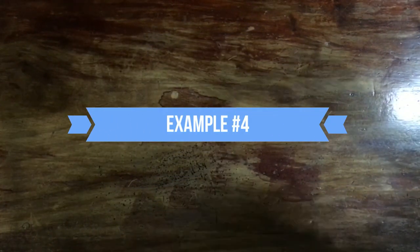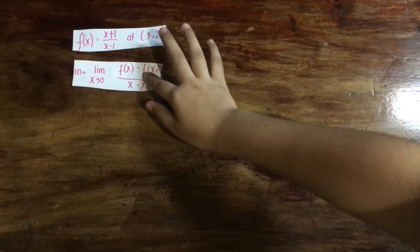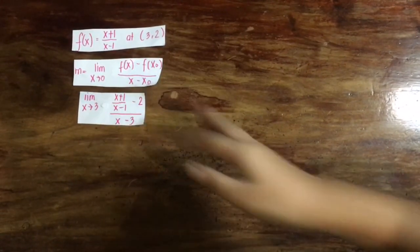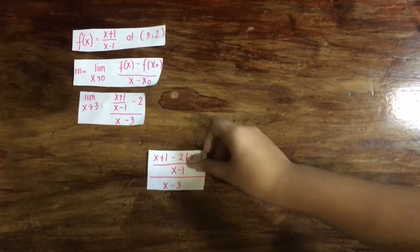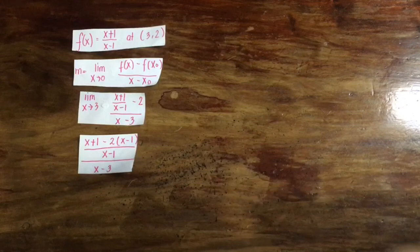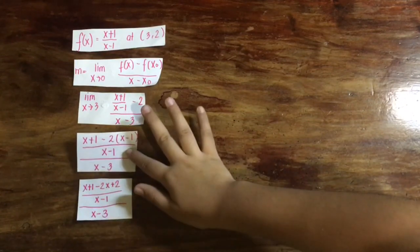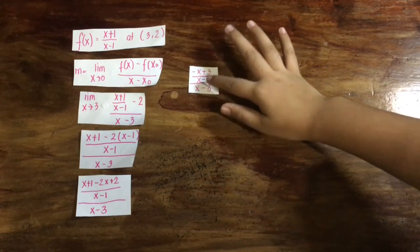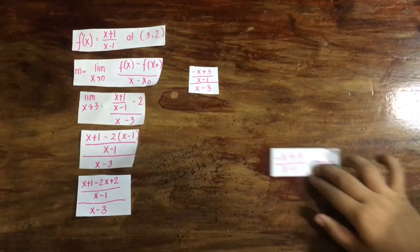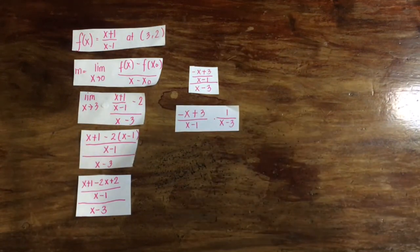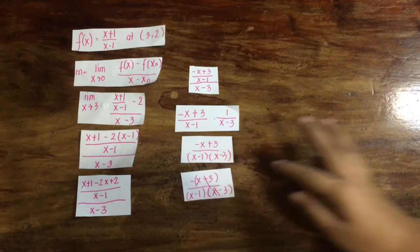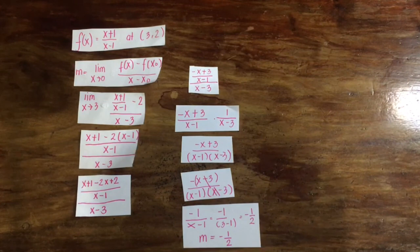Given the function (x plus 1) over (x minus 1) at point (3, 2), we find the slope by substituting into the slope line formula, getting the limit as x approaches 3 of (x plus 1 over x minus 1) minus 2 over x minus 3. Finding the LCD, we get x plus 1 minus 2 times x minus 1, all over x minus 1, divided by x minus 3. Distributing negative 2 and combining like terms gives negative x plus 3 over x minus 1 times 1 over x minus 3. Canceling like terms yields negative 1 over x minus 1, and substituting x equals 3 gives negative 1 half. So the slope is negative 1 half.